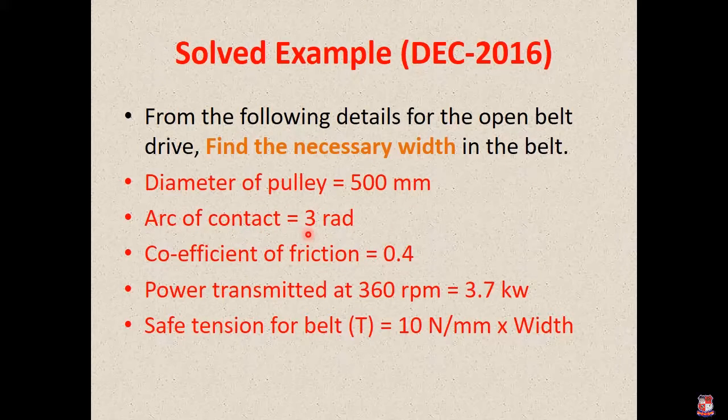Coefficient of friction μ is given 0.4. Power transmitted at 360 rpm. Power is given 3.7 kilowatt and tension is given 10 newton per mm into width.